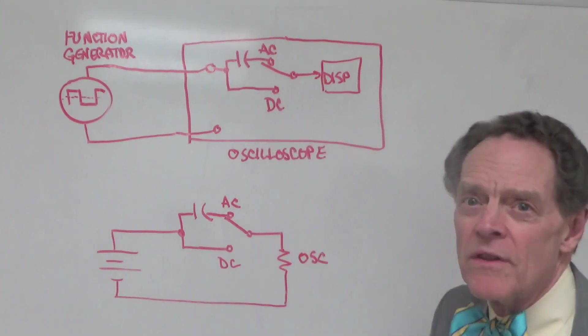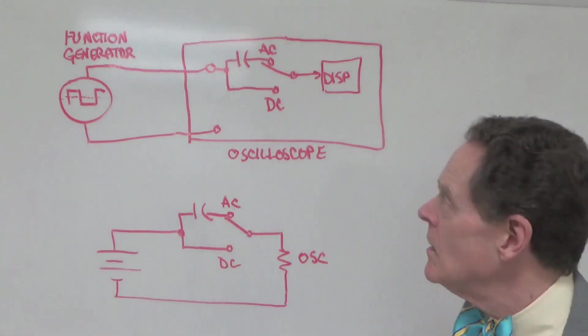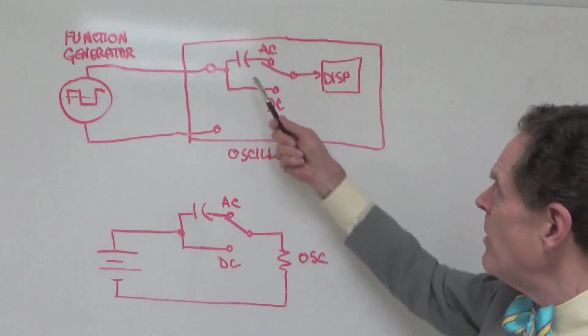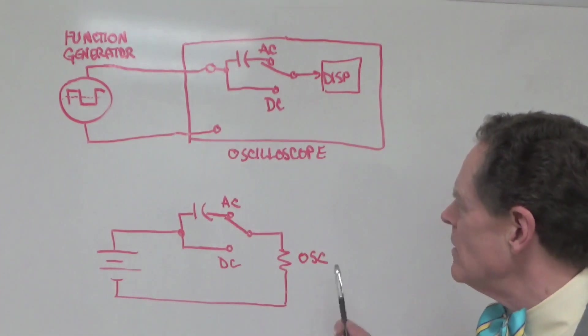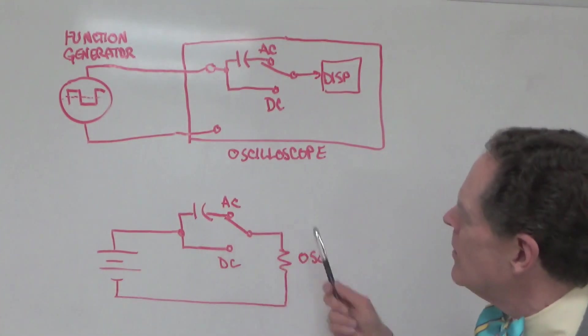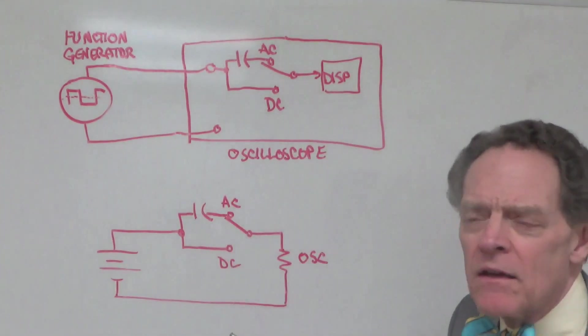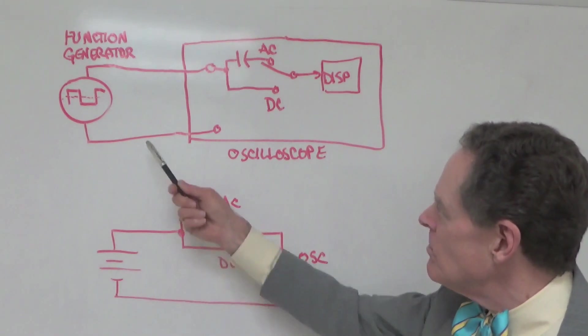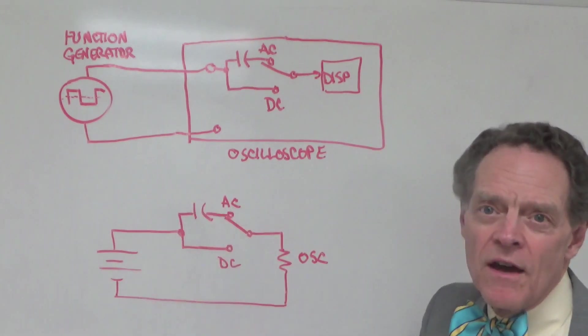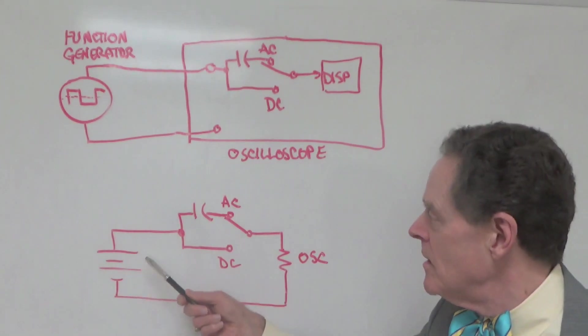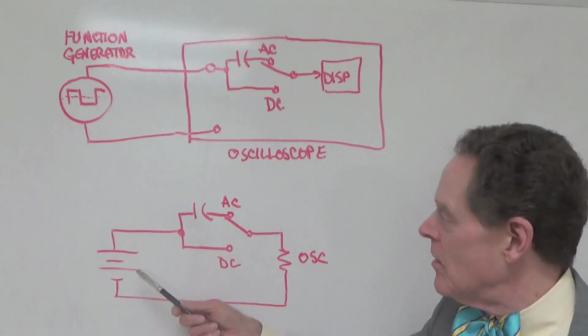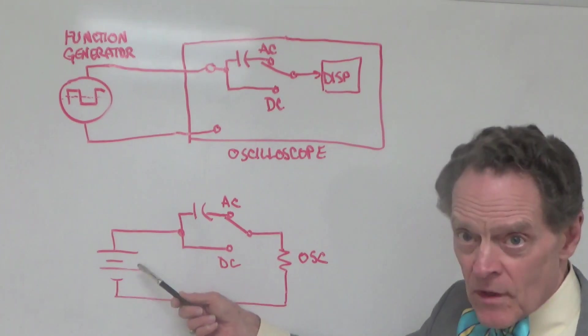And you can see that when we're in the AC coupling position, we have a capacitor that is in line with the signal coming from the function generator. So, in more of a schematic kind of a thing, I replaced the function generator with the power supply, the 2 volt power supply that we had in the earlier part of the video.